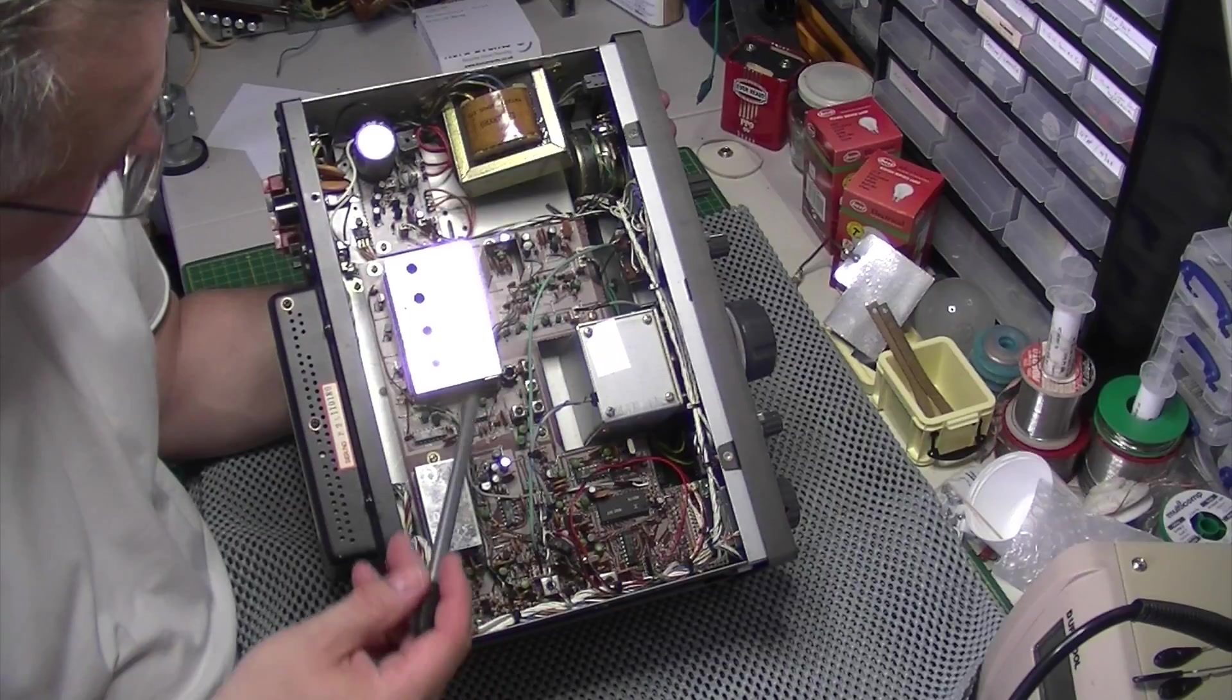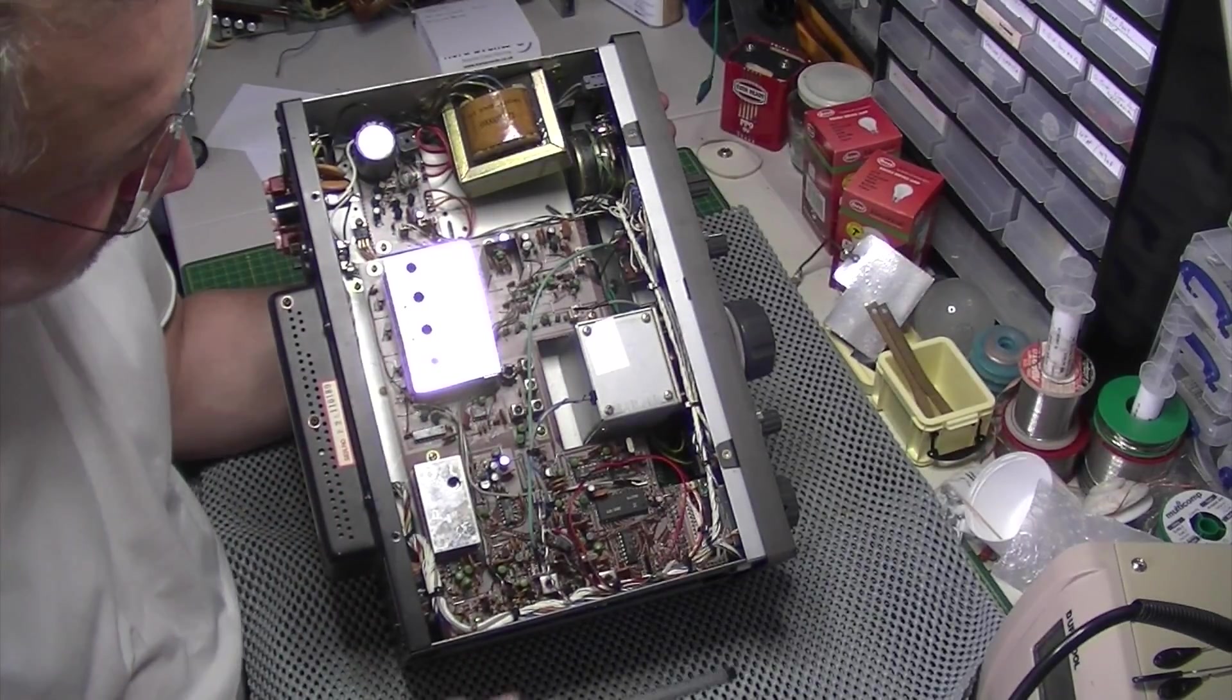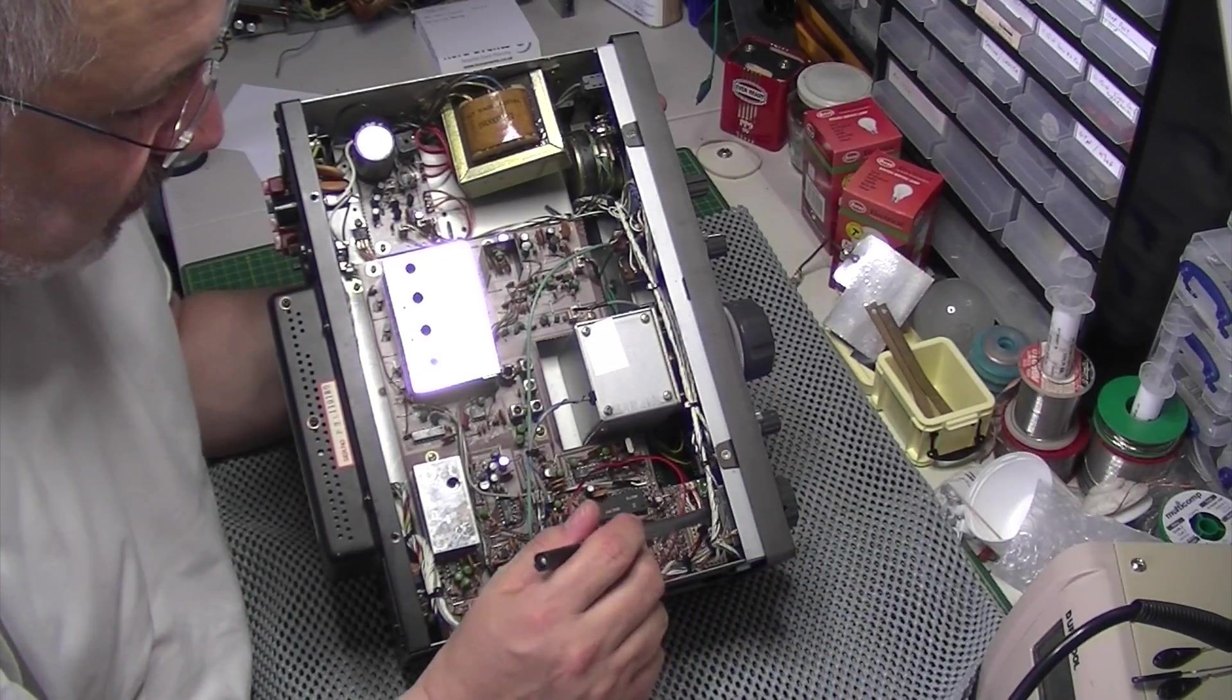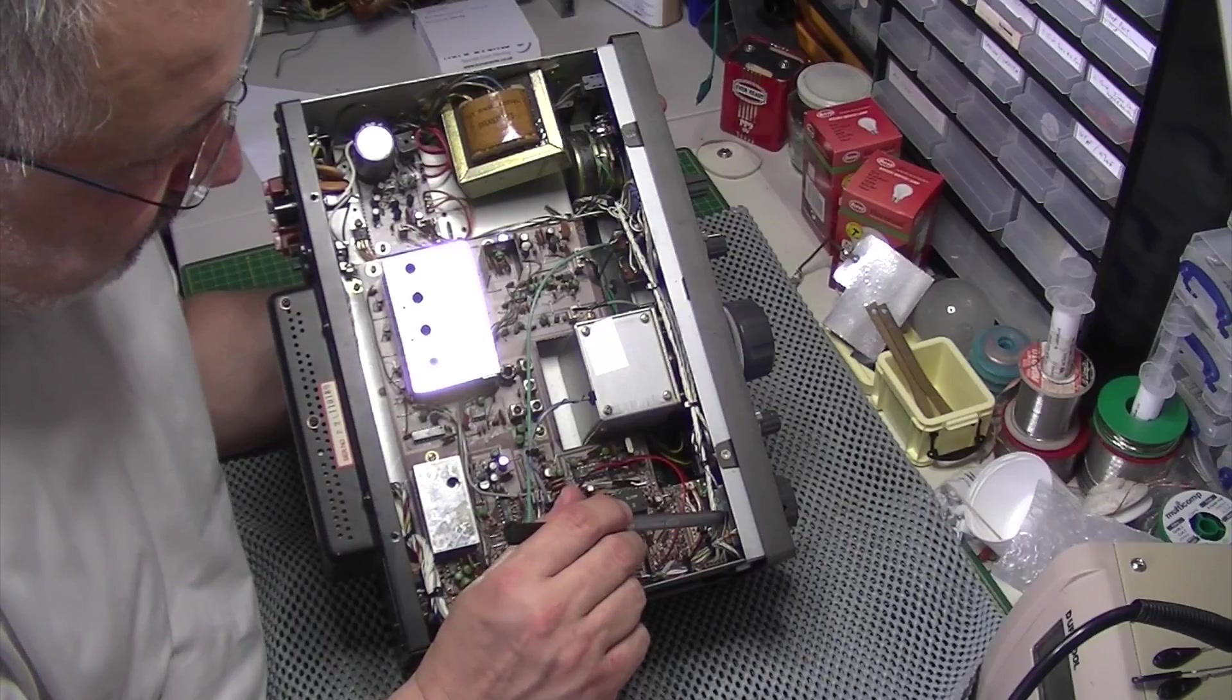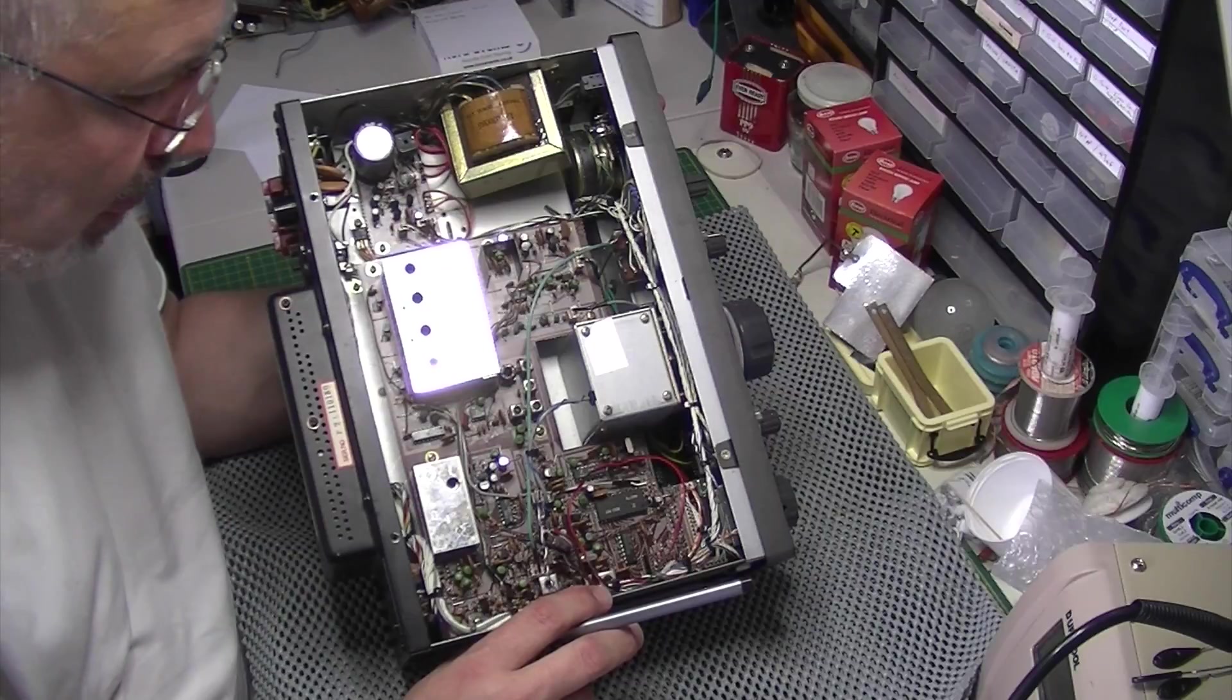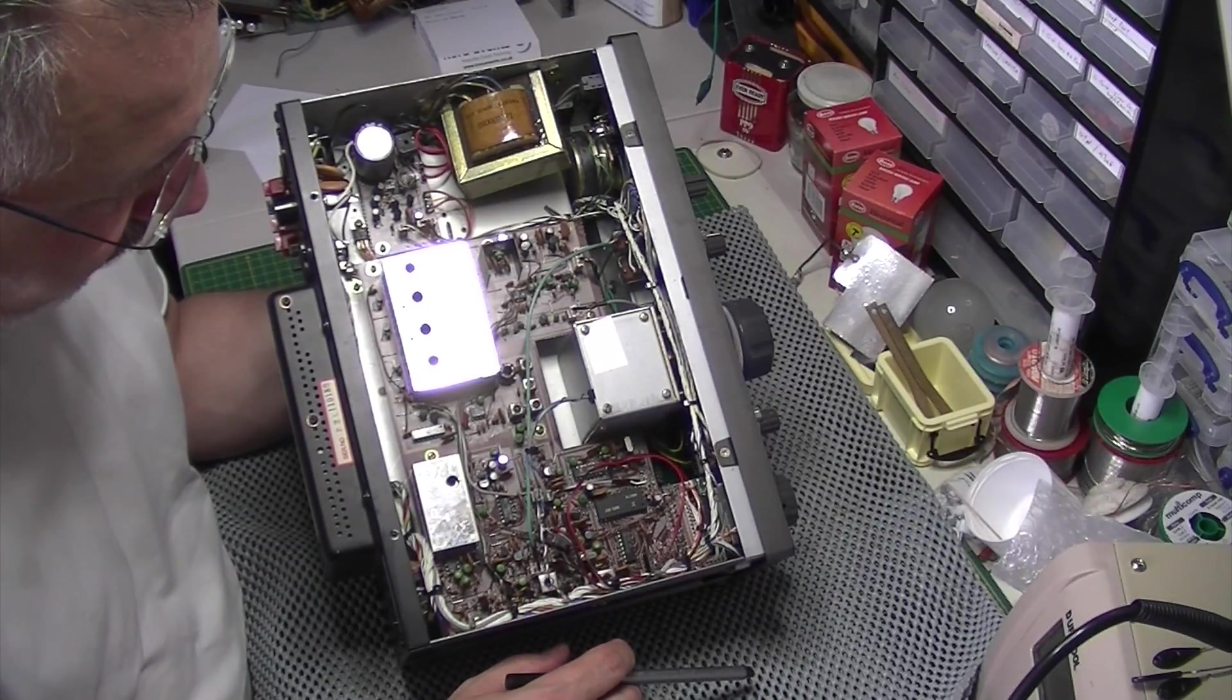As I say it could well be some of these other capacitors on the main board that are causing problems with the band selector. Which is down here, this is quite a complex bit of kit. I'm going to have to be really careful with that but it looks like I'm going to have to take the board out to get at that one. Joy! But as I say very well put together.